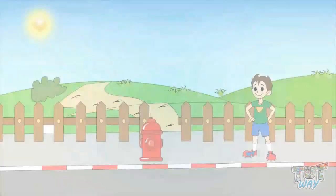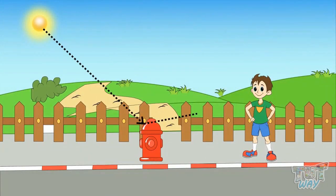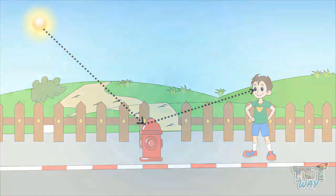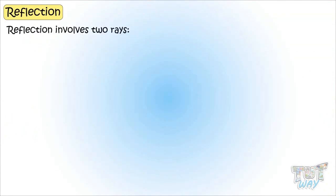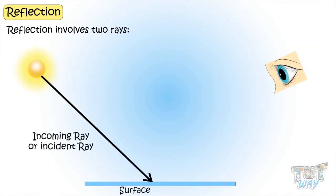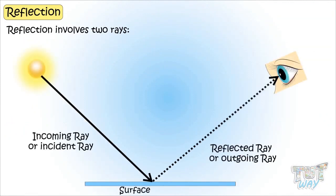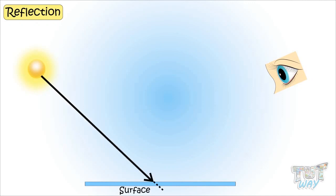Kids, we now know that we see each and everything because of the reflected light from it. Now let's try to understand what is this reflection. Reflection involves two rays — one is the incoming ray and the other one is the reflected ray, or the outgoing ray. When light falls on any surface, some is absorbed and some part of it is reflected back.